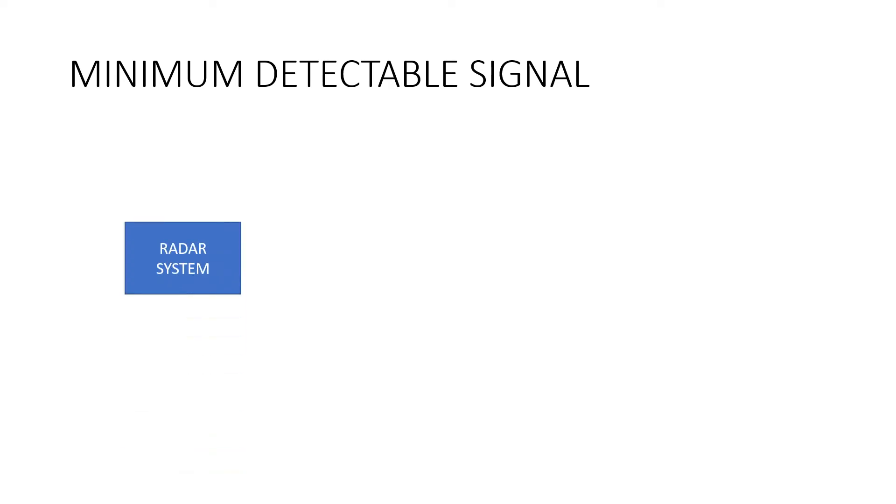First of all, what is the minimum detectable signal? In simple terms, the weakest signal the receiver can detect is called the minimum detectable signal. If the weakest strength signal is received and detected by the radar, then this signal is called the minimum detectable signal. Here we have a radar system, a target, and this is the radar antenna.